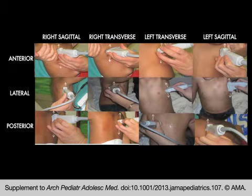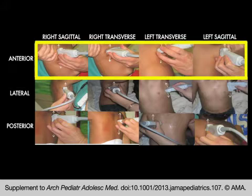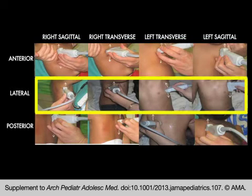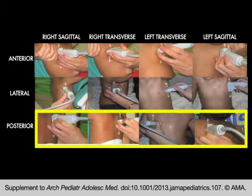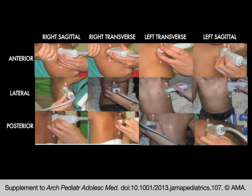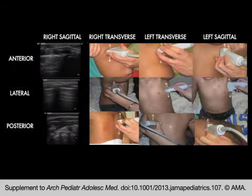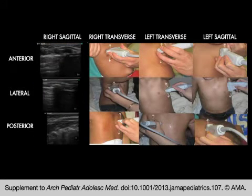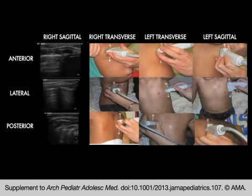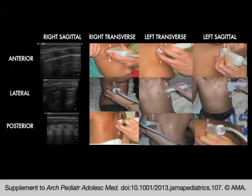To perform lung ultrasound, the chest is scanned in six anatomic areas: right and left anterior at the mid-clavicular line, right and left lateral at the mid-axillary line, and right and left posterior in parasagittal lines medial to the scapula. The following ultrasound videos are all of a child with normal, healthy lungs. Scanning is performed superiorly and inferiorly in each of the six anatomic areas.